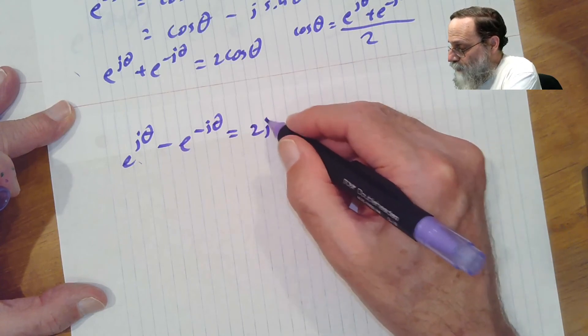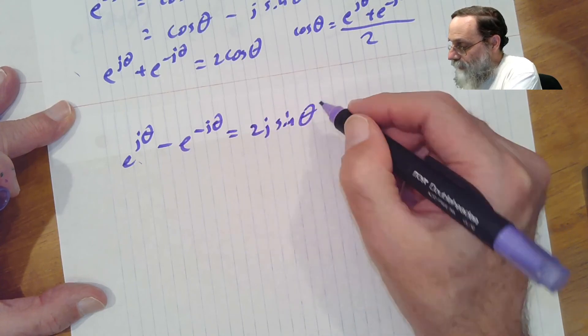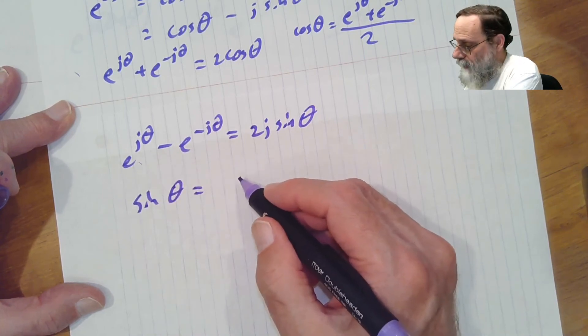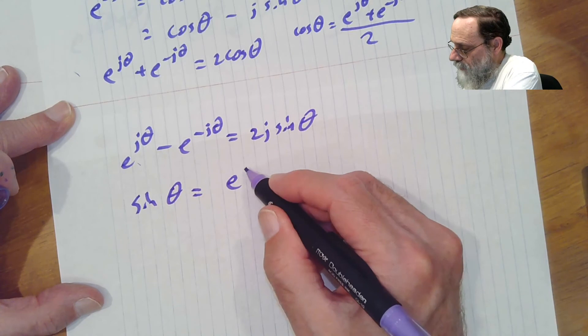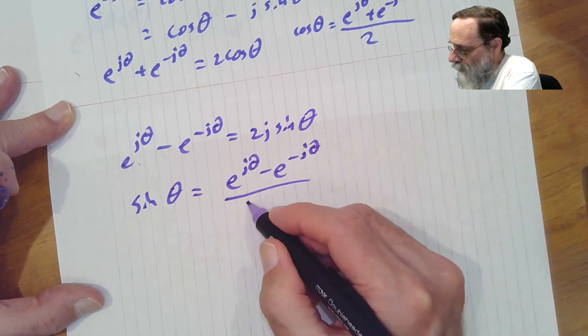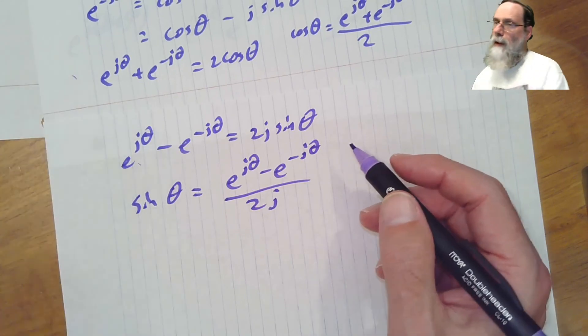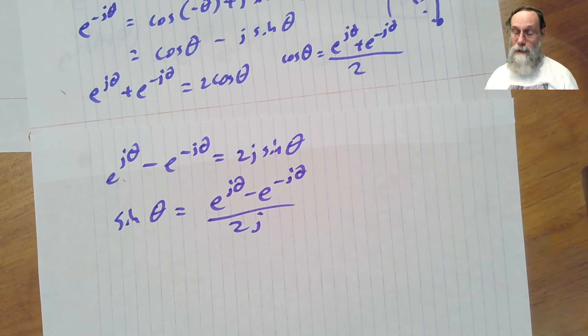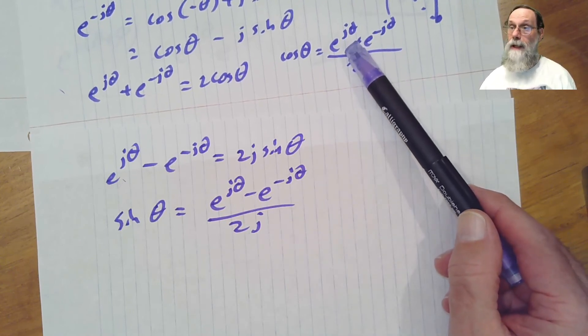So we'll have two j sine theta. Or sine theta is e to the j theta minus e to the minus j theta over two j. So that we can represent real valued things like cosines and sines entirely in terms of these exponentials.